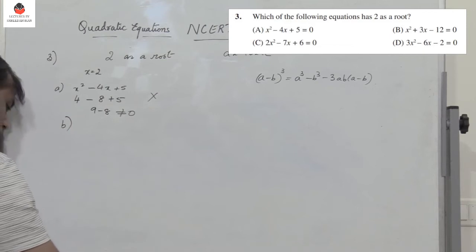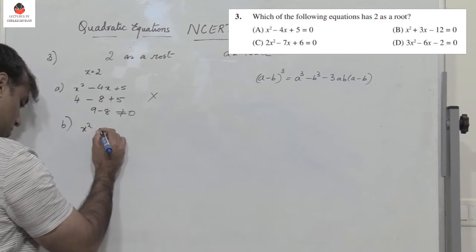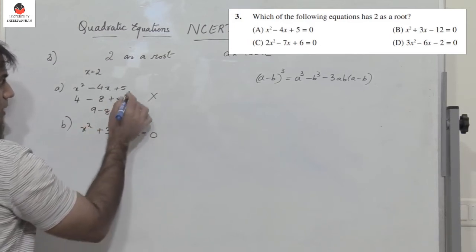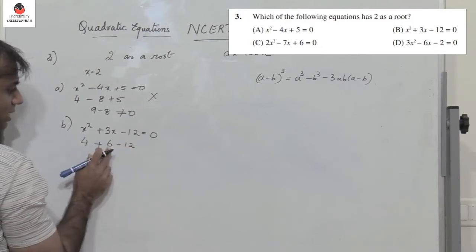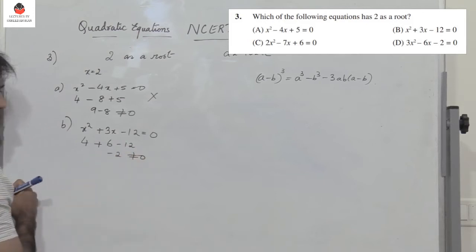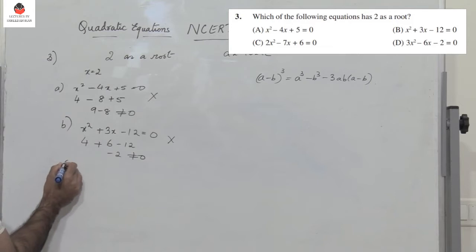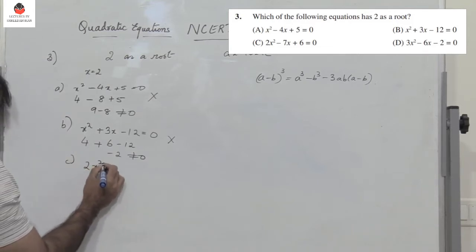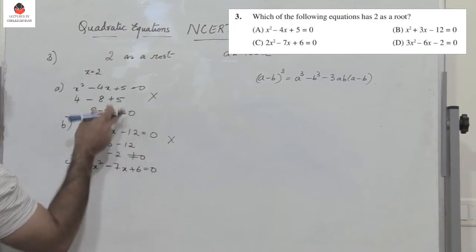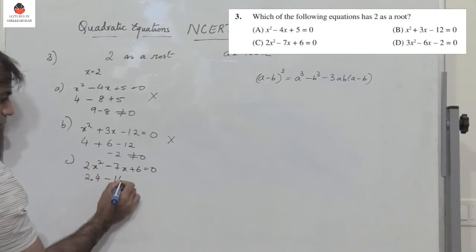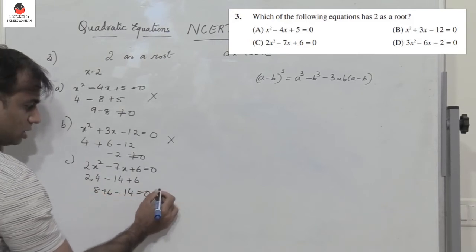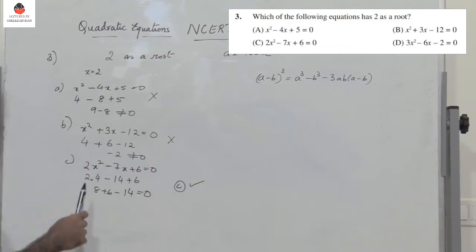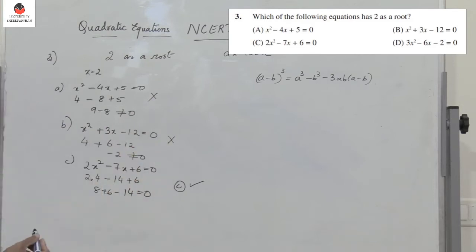Option B: x squared plus 3x minus 12 plus 6 equals 0. Putting x equals 2 gives 4 plus 6 minus 12, which is minus 2 — not equal to 0. Option C: 2x squared minus 7x plus 6 equals 0. Putting x equals 2: 2 into 4 minus 14 plus 6 gives 8 plus 6 minus 14 equals 0. So C is the right option.